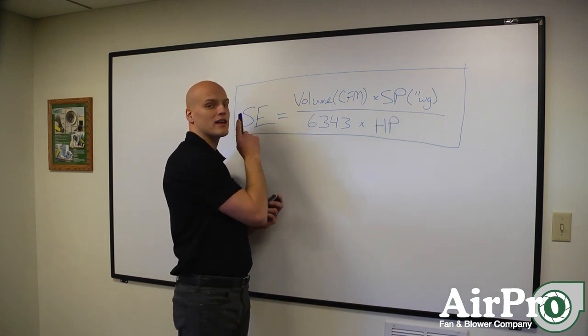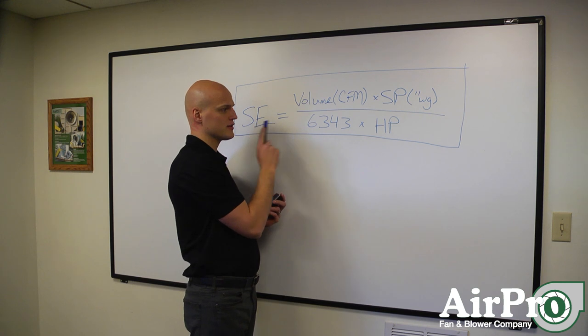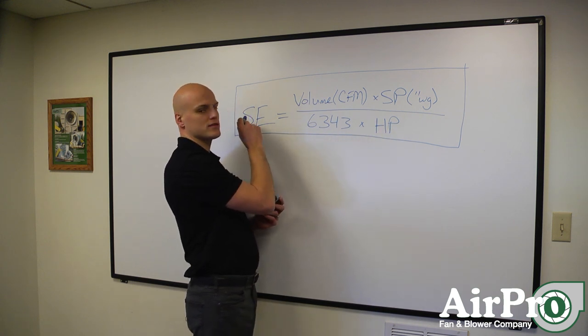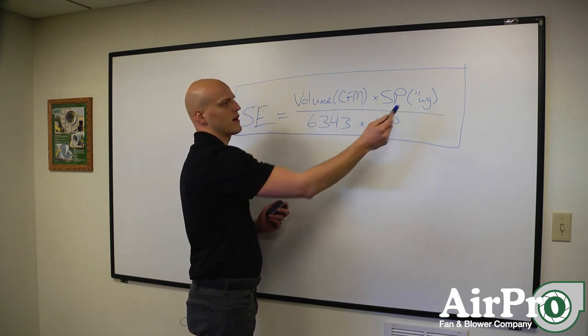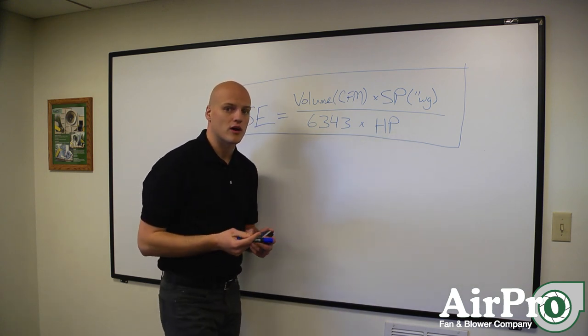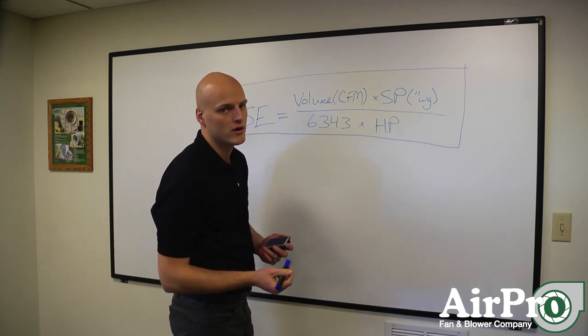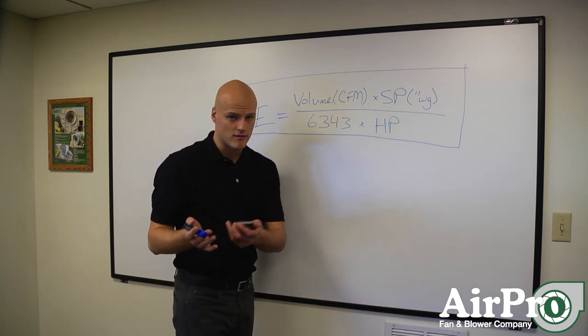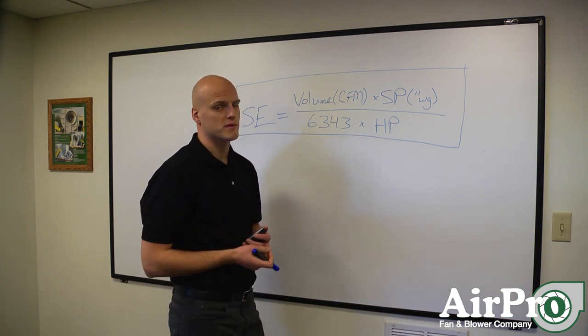And so if you can do that at 80 percent static efficiency, then if we substituted point eight for this, we put 20,000 in for that, we put 10 in for that, the horsepower requirement to do that would be 39.4 horsepower. So you can move 20,000 CFM at 10 inches with only a 40 horsepower motor.